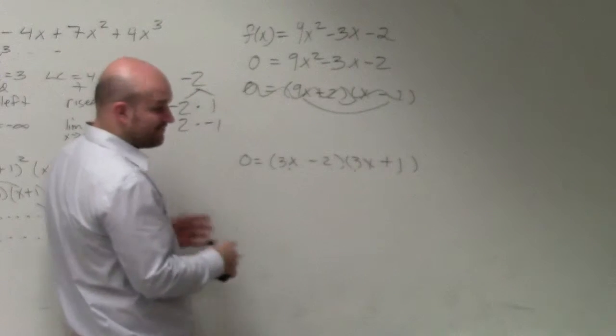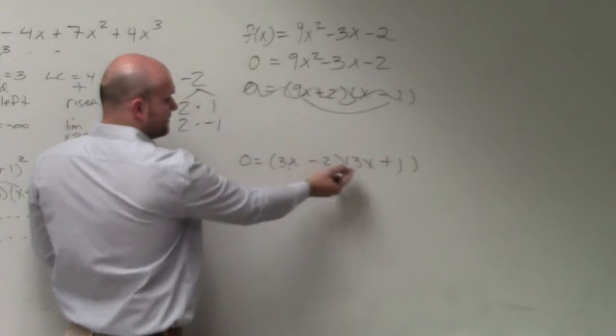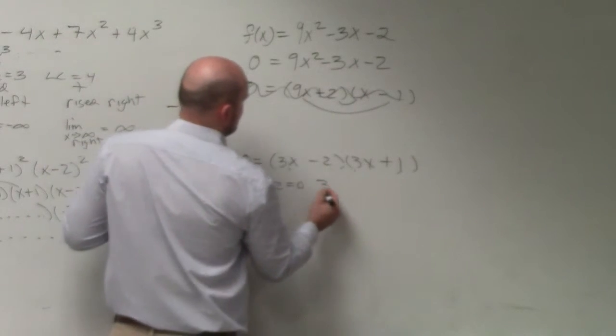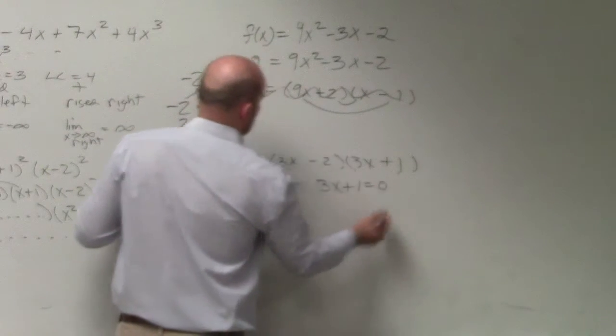Now, I have a factored form set equal to 0, and then you solve.